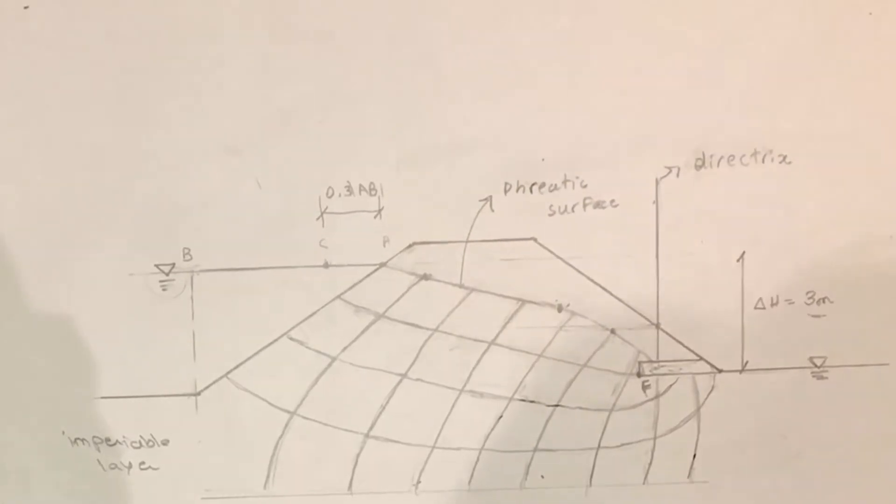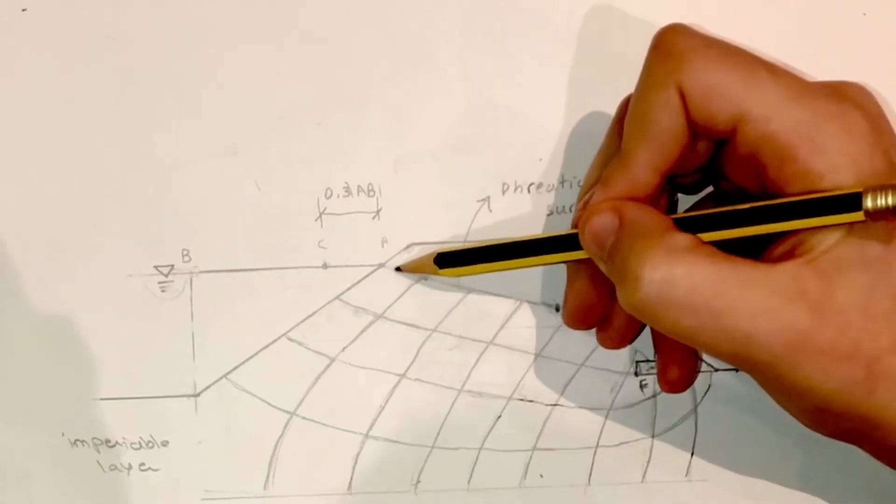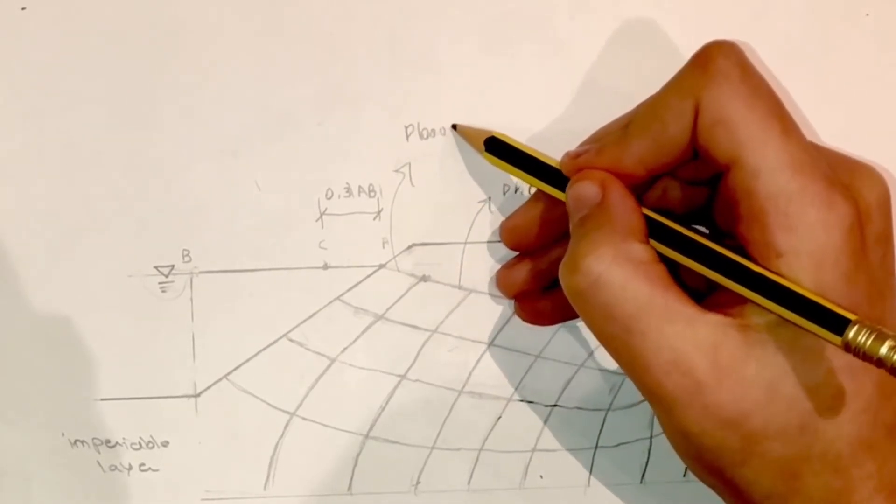And then all the rest of the flow lines just follow the shape of that phreatic surface. So flow nets consist of flow lines and equal potential lines.